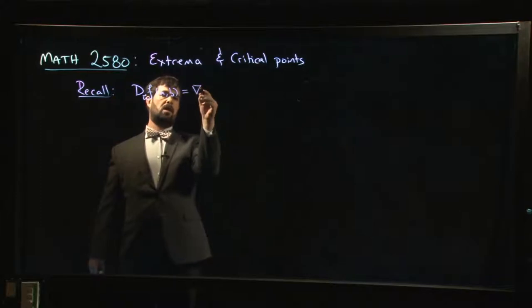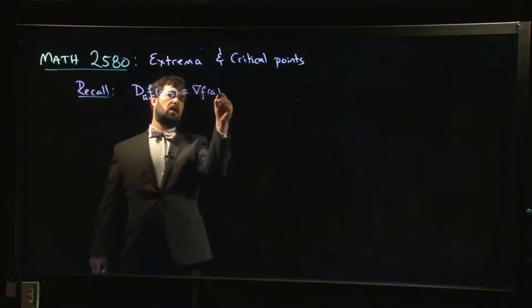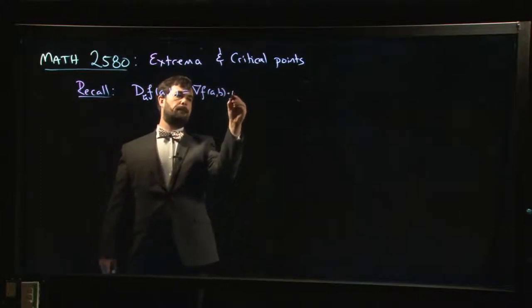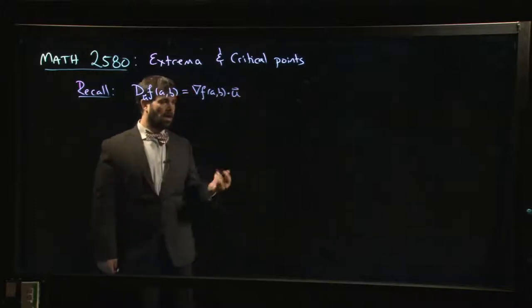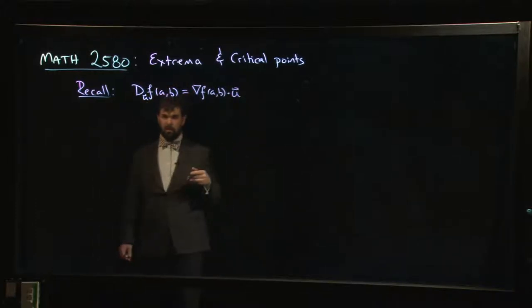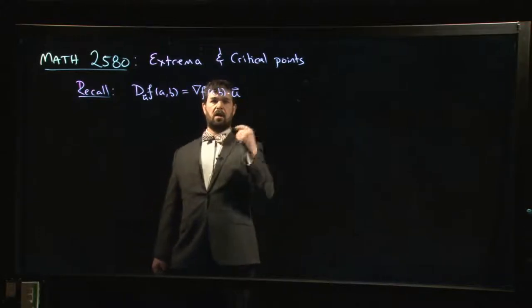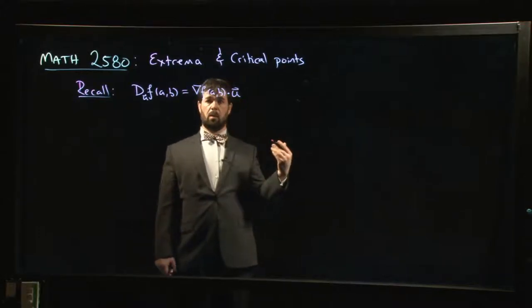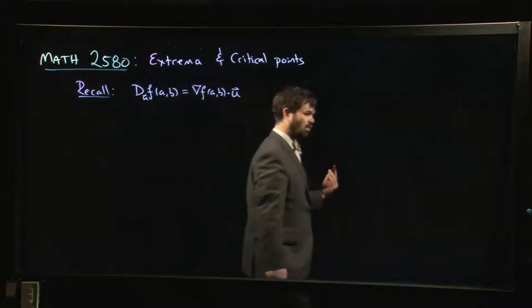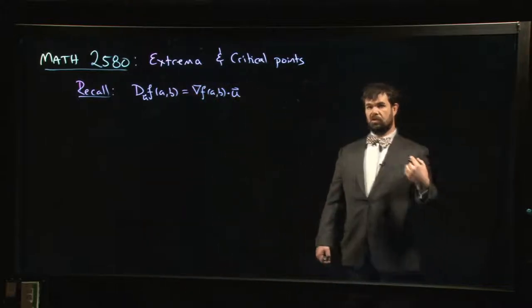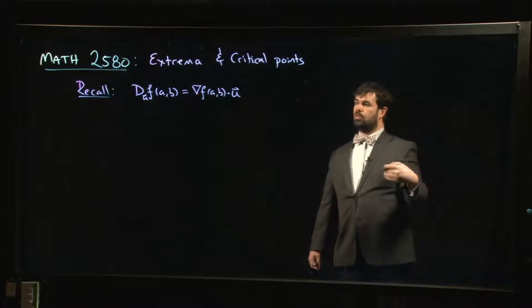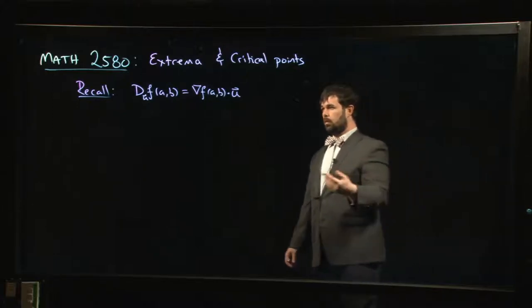We talked about the fact that this tells us that the gradient vector, when u is parallel to the gradient, we get a maximum rate of change, either maximum increase or decrease depending on whether u is pointing in the same or the opposite direction as the gradient.